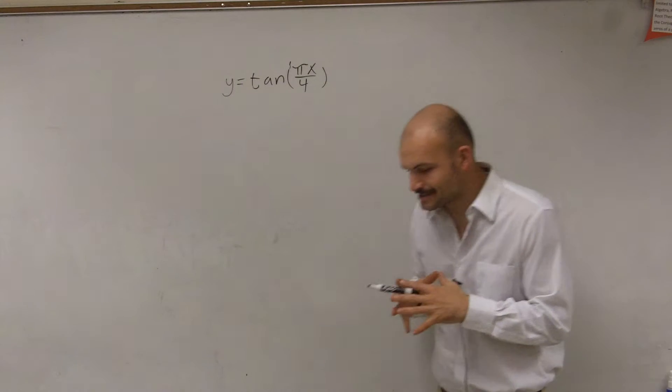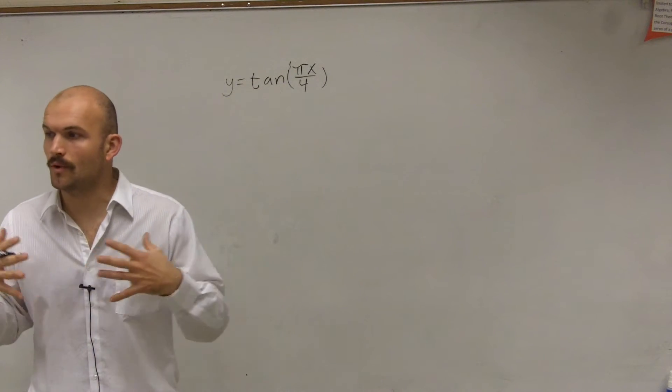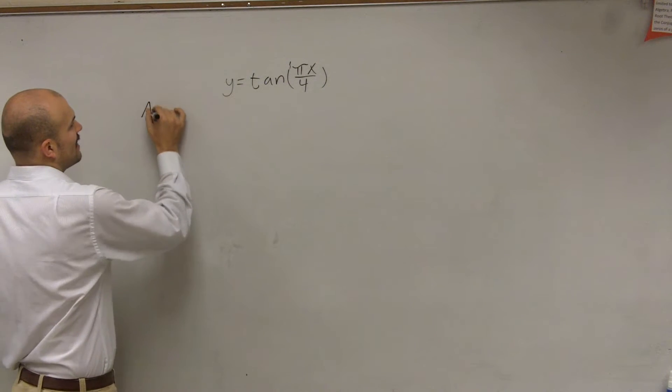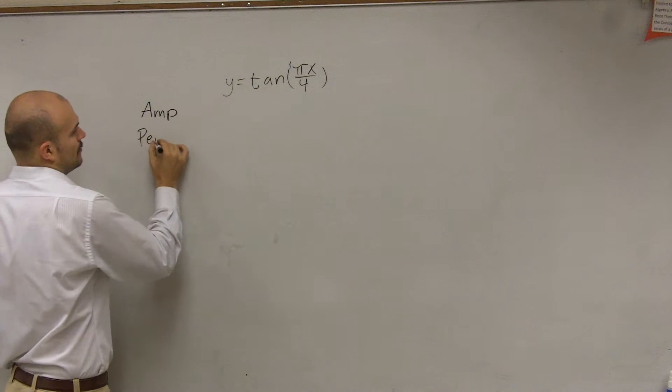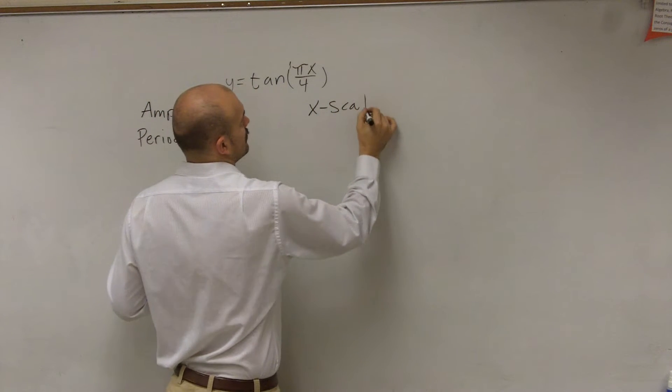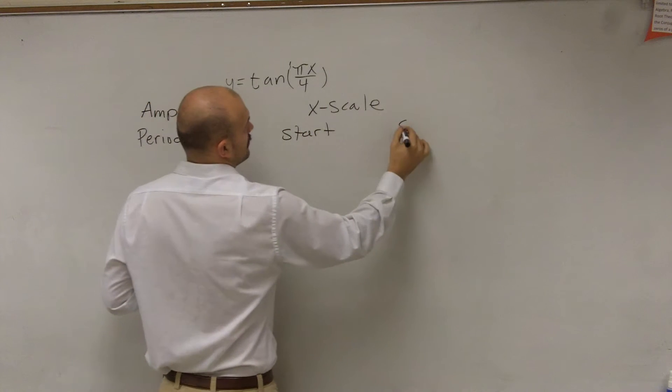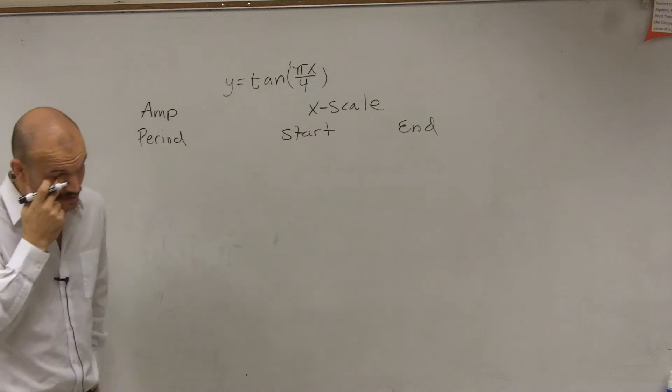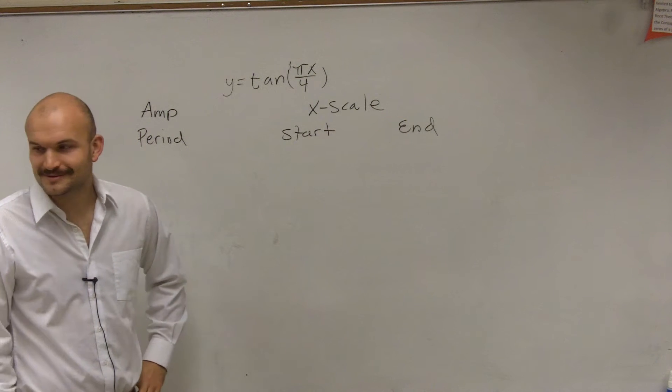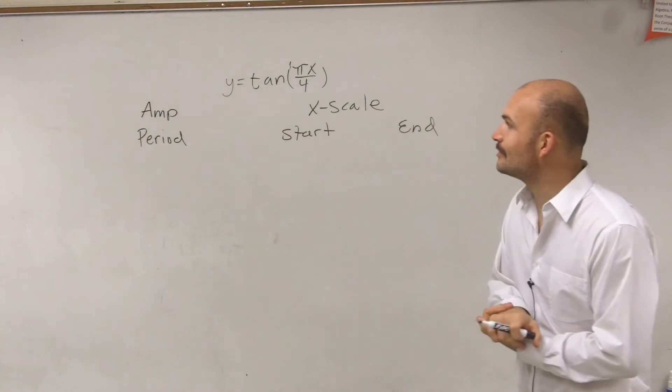So what I'm going to go through is we have y equals tangent of pi x divided by 4. And what I want to do is just kind of go back through what exactly we usually look for on every one of our trig graphs.